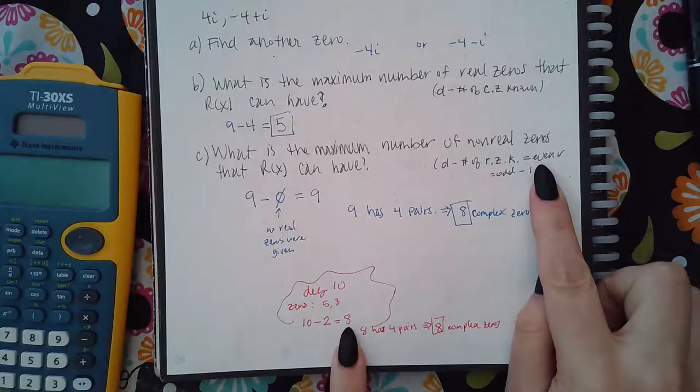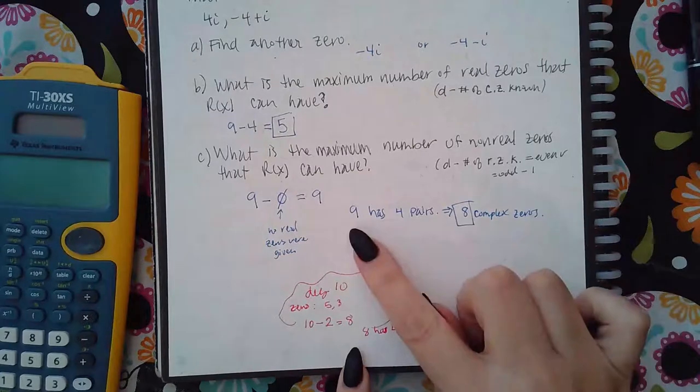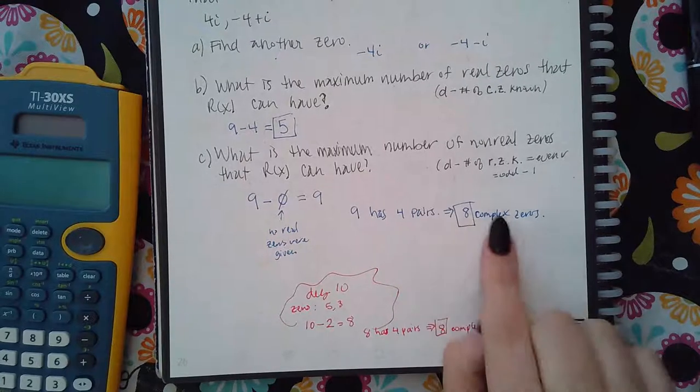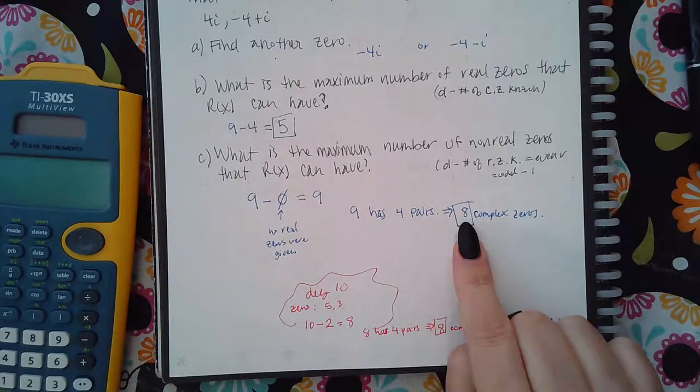Either that's going to be the answer because it's even, or if it's odd, you have to take away 1 to turn it into an even number. Once you take away 1, then you get the 8 complex zeros.